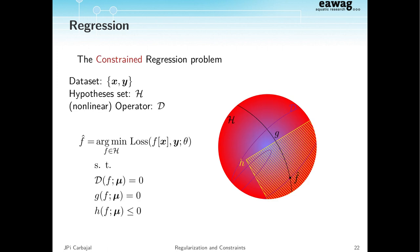Then we have constrained regression problems, where we want the same thing as before but now add constraints — mathematical relations that must be fulfilled exactly by your solution. The usual setup includes algebraic functionals that evaluate only on your model, not using the data. These are properties of your model. You also have inequality constraints, and you want to find a solution that minimizes the loss while satisfying both the equality constraints G and the inequality region.